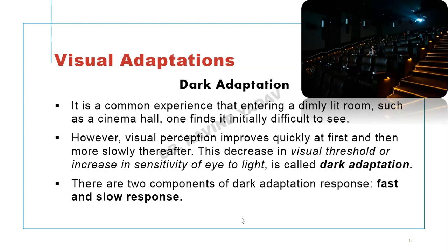Dark adaptation: when a person suddenly moves from bright sunlight into a darker room, they do not see anything due to very low retinal sensitivity. After staying there for a few minutes, retinal sensitivity increases because of regeneration of rhodopsin. This is a common experience — when we go into a dim room or a cinema hall, initially we do not see, but later we get adapted. This decrease in visual threshold and increase in sensitivity is called dark adaptation.